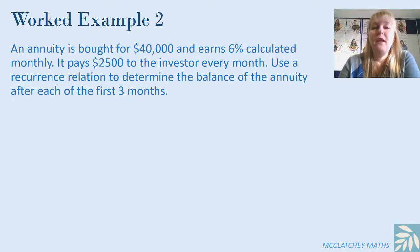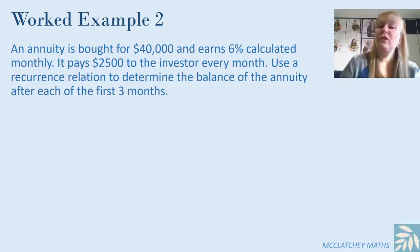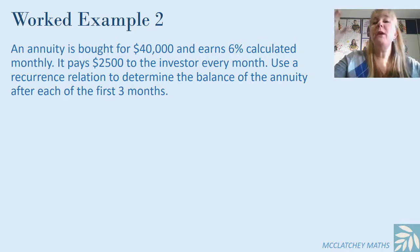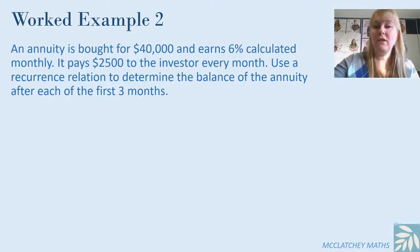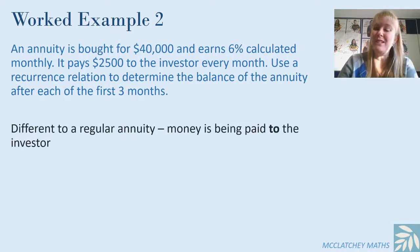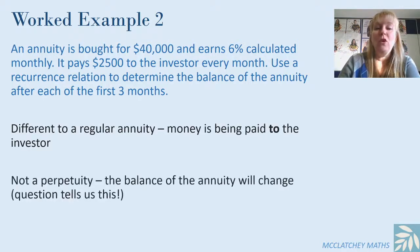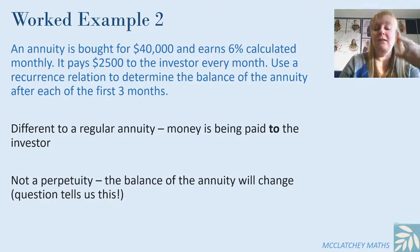Let's look at worked example two. This time we've got an annuity bought for $240,000 earning 6% monthly, paying the investor $2,500 every month. In my previous videos we looked at annuities where the investor was putting money in and we had a future value sometime in the distant future. In this case we've invested in the annuity and it's paying us. So because money is coming out, this is going to be different to a regular annuity where we're paying money in.